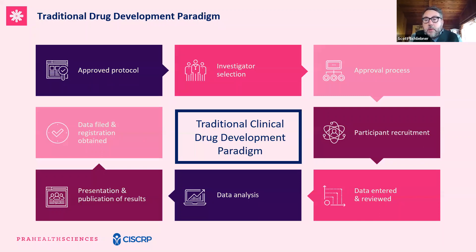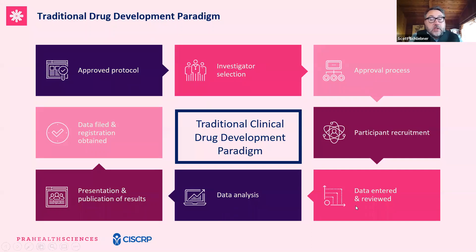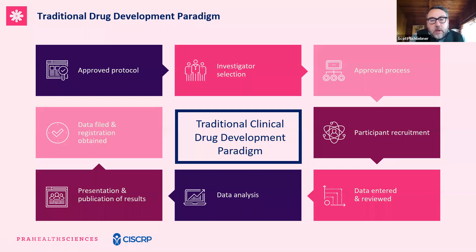Once a biotech or pharmaceutical company approves a protocol — often done internally without a lot of external stakeholders — we then typically move that protocol out to clinical sites, recruit investigators, and start moving through ethics and IRB approval processes. From there, once we have a protocol open and approved at a clinical site, we begin to reach out to participants, screen and enroll them. Data is entered, reviewed, analyzed, presented, and published, ultimately hoping new therapies are approved.